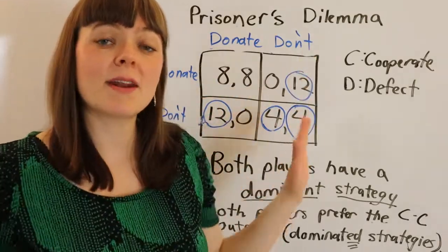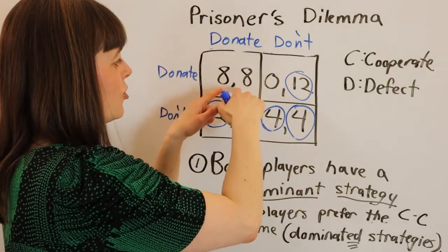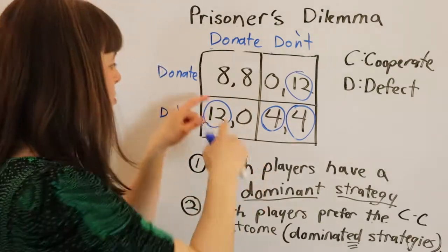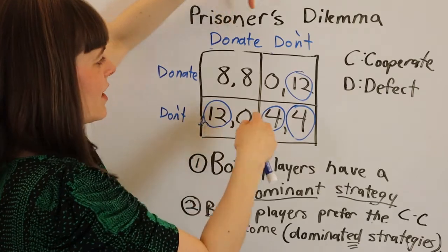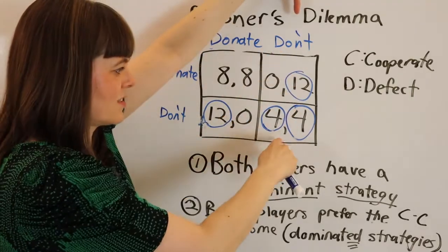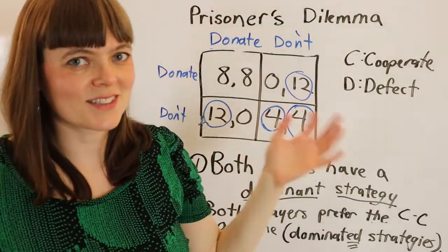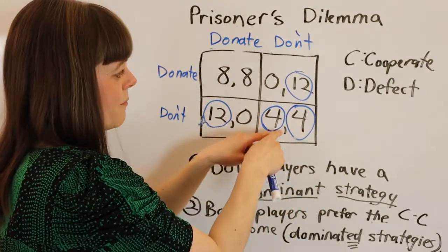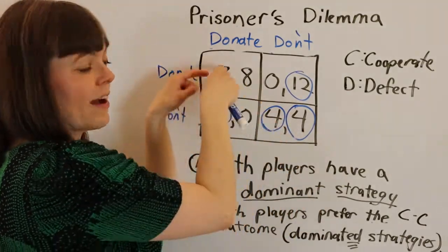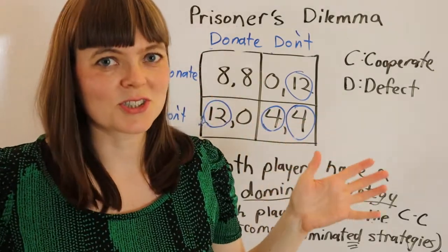If everybody else donates, your best response is not donating. If nobody donates, your best response is not donating. So the dominant strategy is to not donate, even though everyone would be better off if everybody donated. That's a prisoner's dilemma.